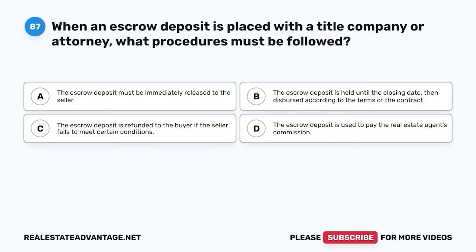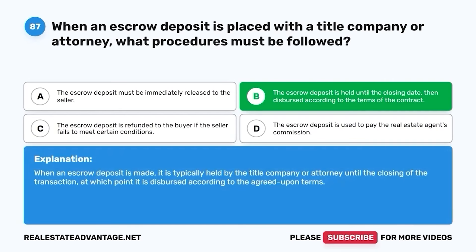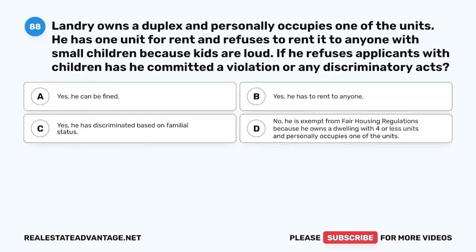Question 87. When an escrow deposit is placed with a title company or attorney, what procedures must be followed? A. The escrow deposit must be immediately released to the seller. B. The escrow deposit is held until the closing date, then dispersed according to the terms of the contract. C. The escrow deposit is refunded to the buyer if the seller fails to meet certain conditions. D. The escrow deposit is used to pay the real estate agent's commission. The correct answer is B. The escrow deposit is held until the closing date, then dispersed according to the terms of the contract. When an escrow deposit is made, it is typically held by the title company or attorney until the closing of the transaction, at which point it is dispersed according to the agreed-upon terms.